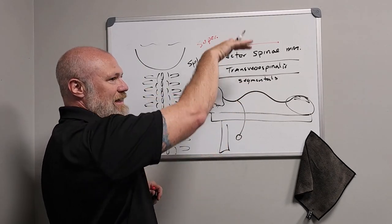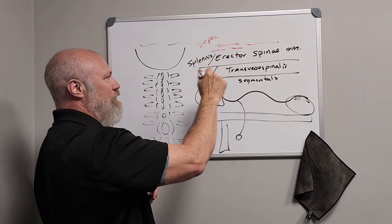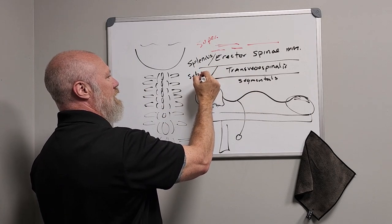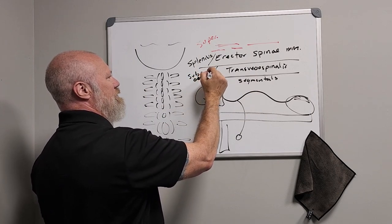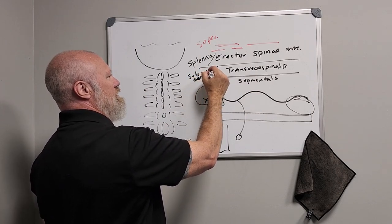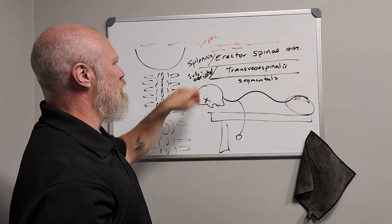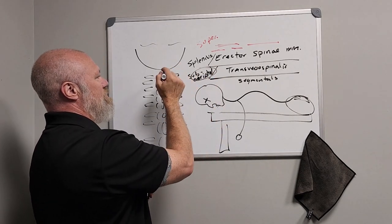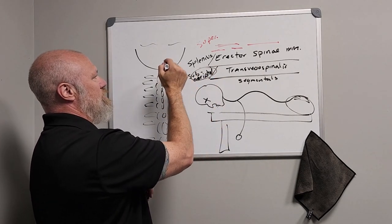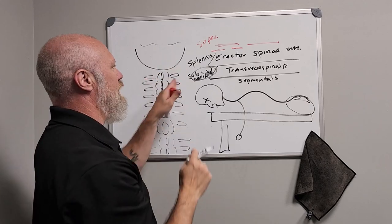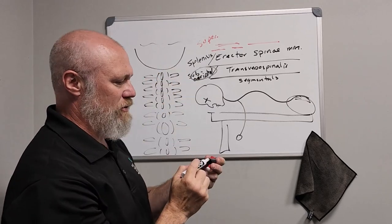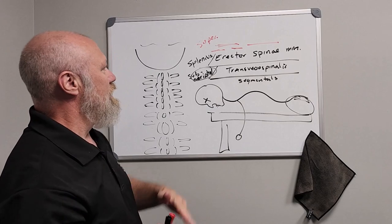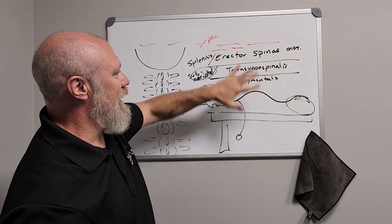At about the same dissection level as the transversospinalis, you could also include the suboccipital muscles from C1, C2, and the base of the occiput. I'll include those when I cover the neck muscles so we don't overload this section. So remember that layered organization as we go deeper.